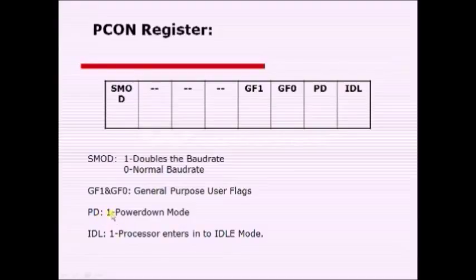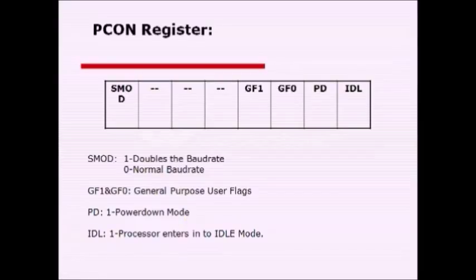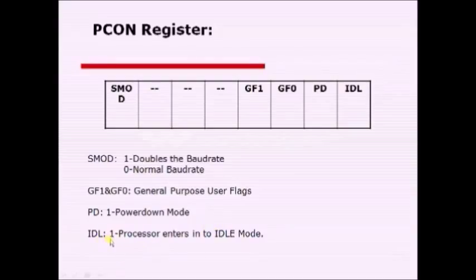When the power-down bit is 1, the processor enters power-down mode — the clock is gated off to all sections including peripherals, and supply voltage is reduced to 2 volts just to keep data present in RAM. This is similar to standby mode in PCs. If the idle bit is programmed to 1, the processor enters idle state — the clock signal is available to all peripherals but not to the CPU, so only the CPU clock is gated off.